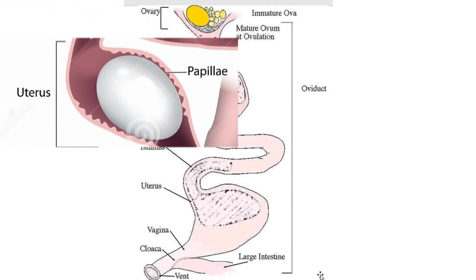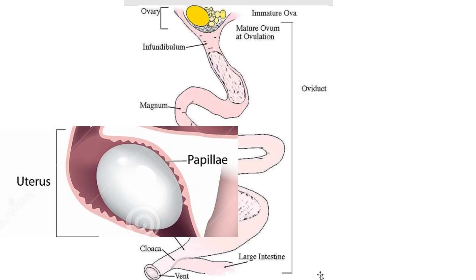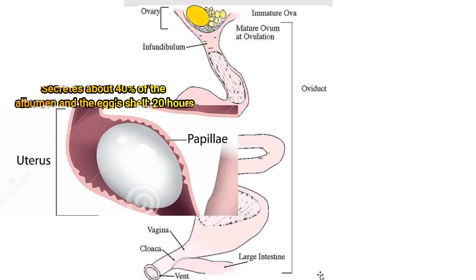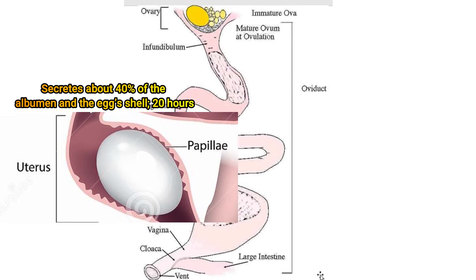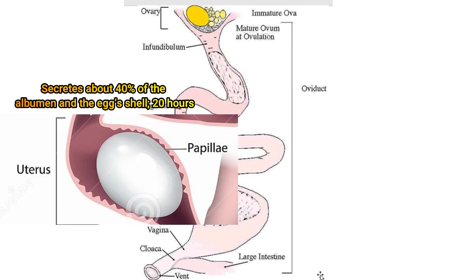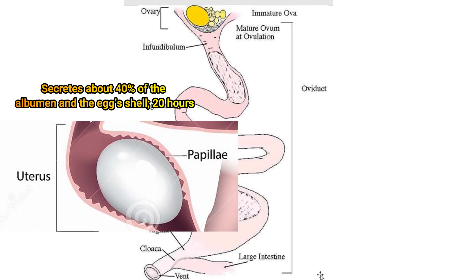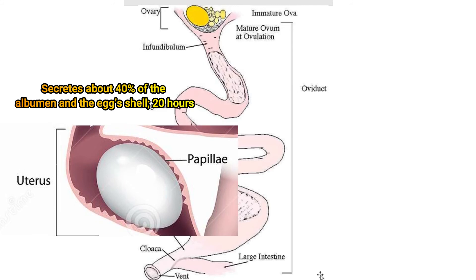The next section of the oviduct is the shell gland or the uterus, which is 4 to 5 inches long. In this section, the shell forms on the egg. The shell is largely made of calcium carbonate, and the hen's body mobilizes 8 to 10% of the body calcium from its bone to make the egg's shell. Bone calcium provides 47% of the calcium required to make a shell, and the hen's diet provides the remainder. Pigment deposition, if there is any, occurs in the shell gland. The egg remains here for 20 or more hours.